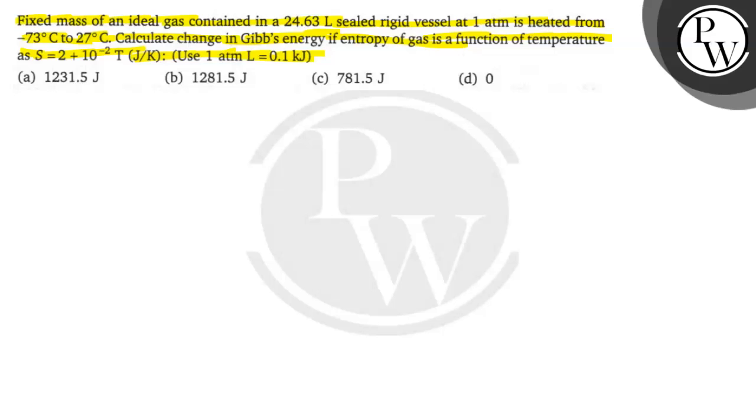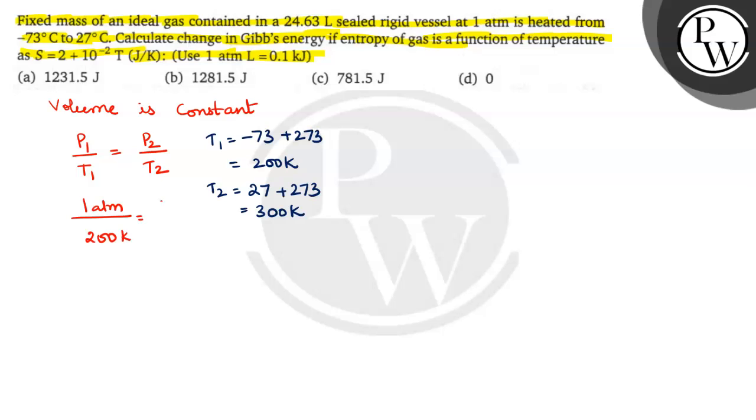What is given first we will write. This is volume as volume is constant. Then for P1 by P2 or P1 by T1 is equal to P2 by T2. So P1 given is 1 atmosphere. And temperature is T1 minus 73 degrees Celsius plus 273. Then T is giving 200 Kelvin temperature. T2 is equal to 300 Kelvin.